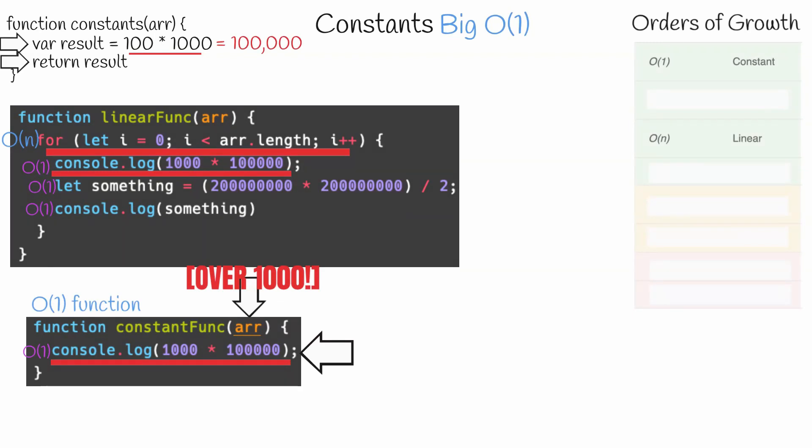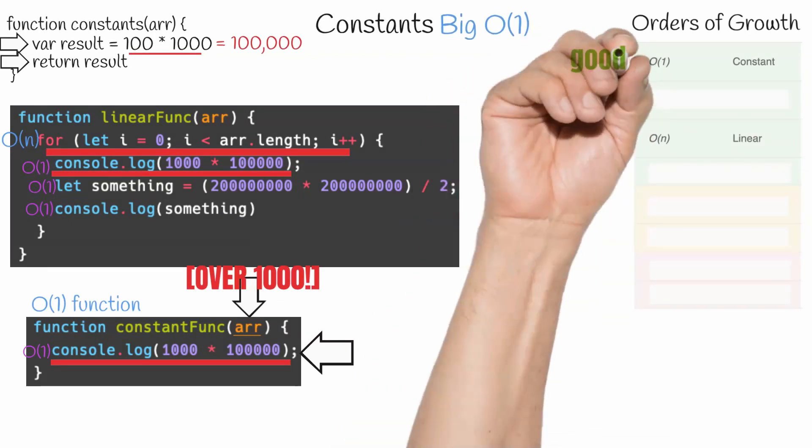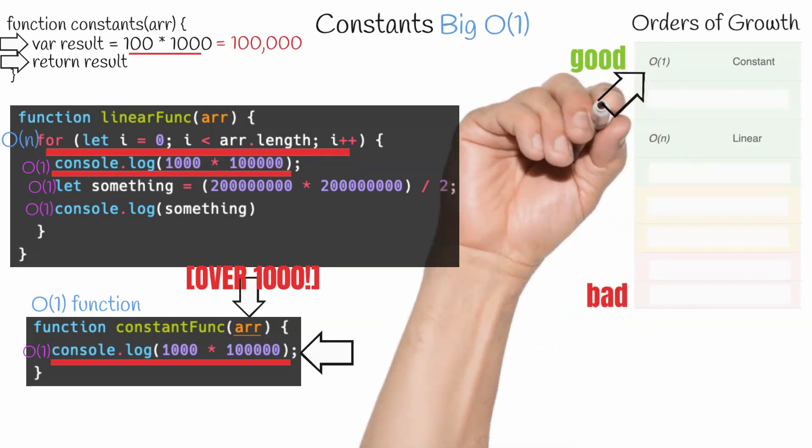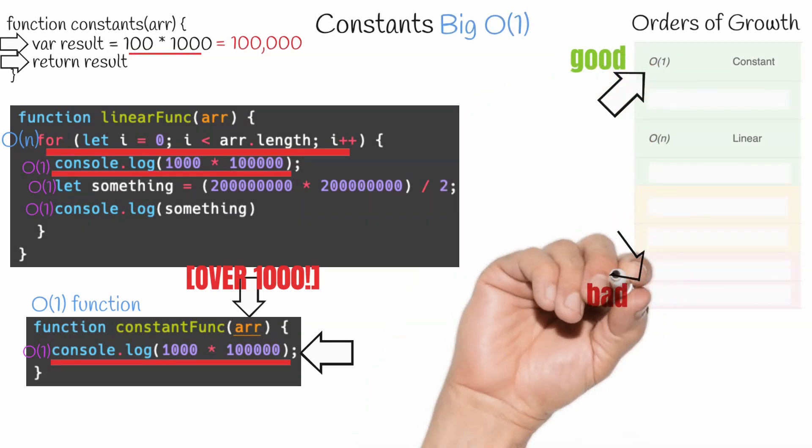This chart shows the efficiency categories in order from good to bad. That is to say that this first case, O of one, is the best case, and this last one is the worst case.